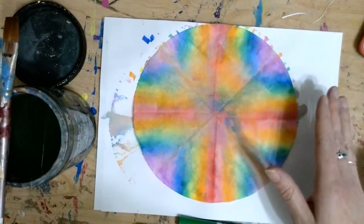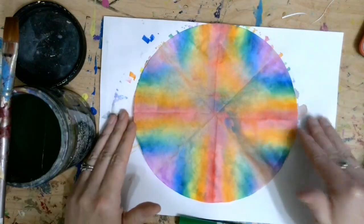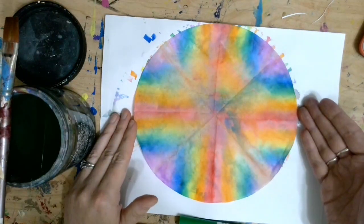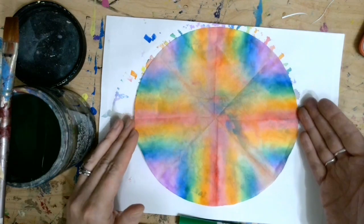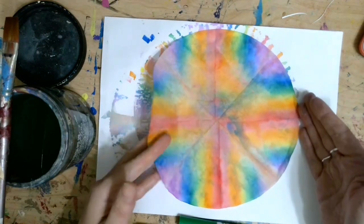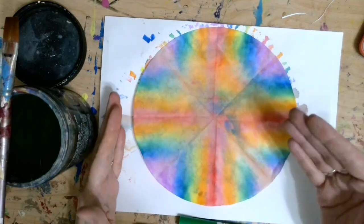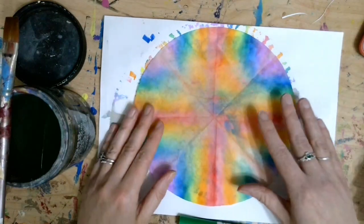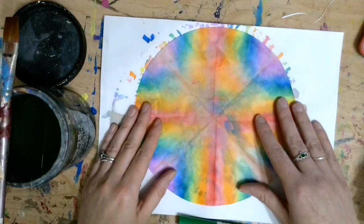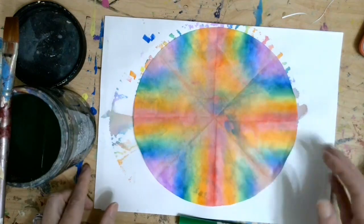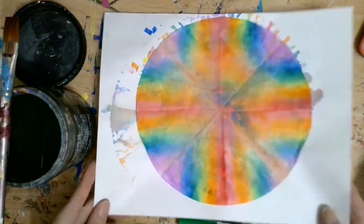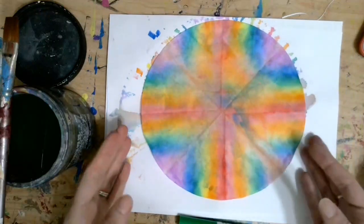You're also going to want some type of messy mat to go underneath your coffee filter. So whether that's newspaper, a tablecloth, a piece of copy paper, something to go underneath because these are going to get very wet and make a very big mess. They're going to be kind of floppy until they're dry so you might want to lift them with the messy mat to put them somewhere to dry.